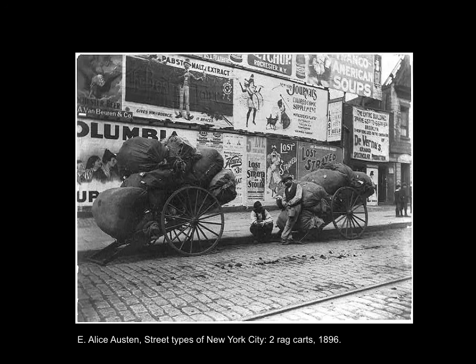Over in New York, we have E. Alice Austin. In the 1890s, hundreds of thousands of immigrants were pouring into the United States, primarily through New York and the West Coast, settling into major cities. In 1900, over 35% of the populations of large cities such as New York and Chicago were foreign-born. Alice Austin was a Staten Island socialite and photographer who also completed a large study of, quote, street types in the busy streets of New York City.